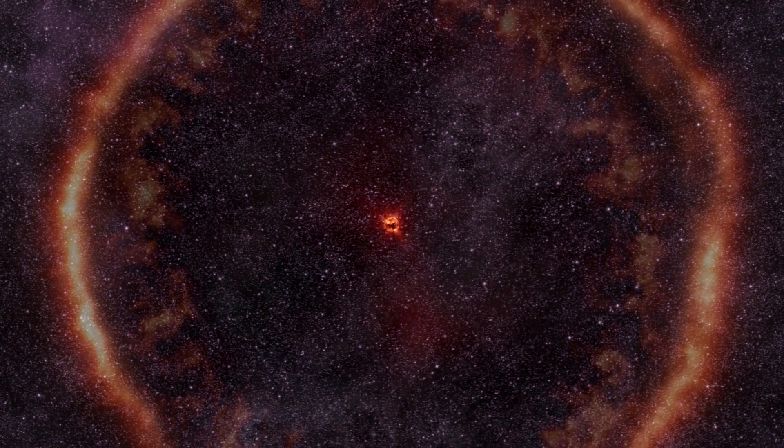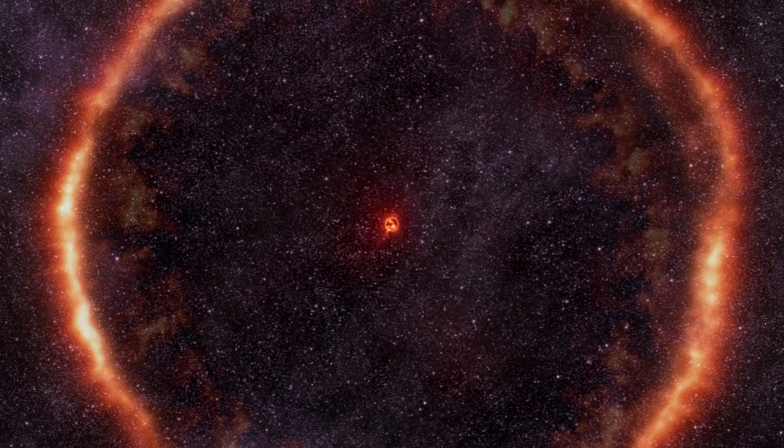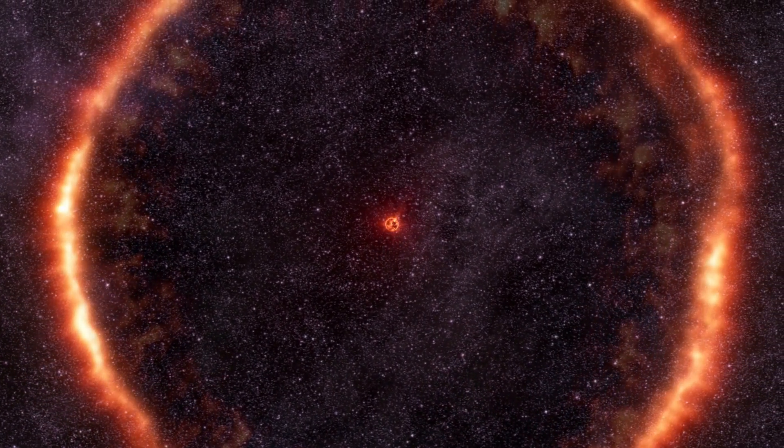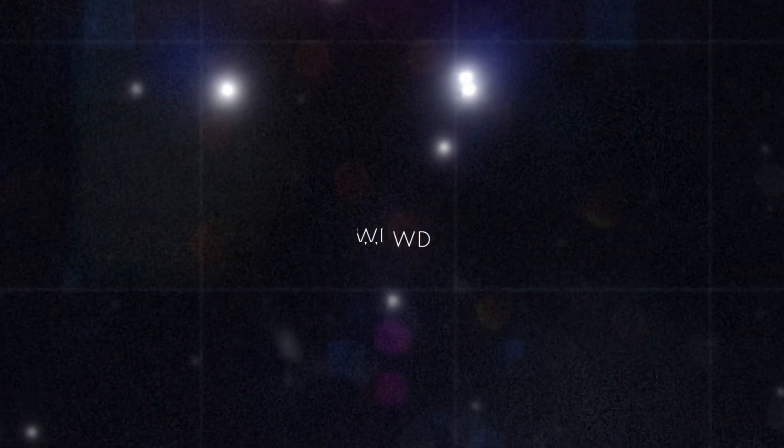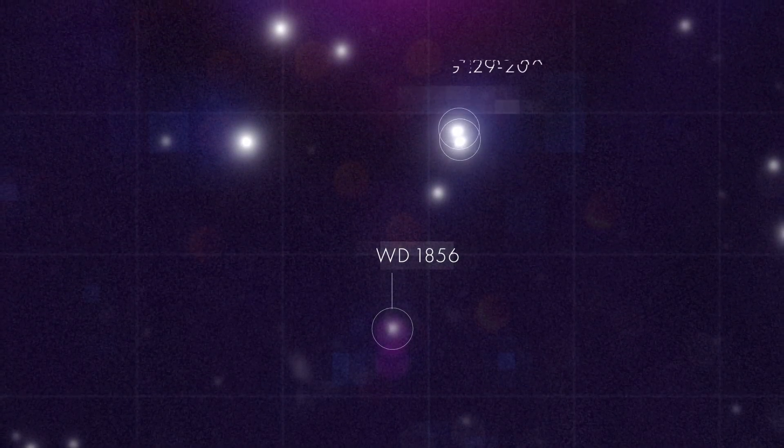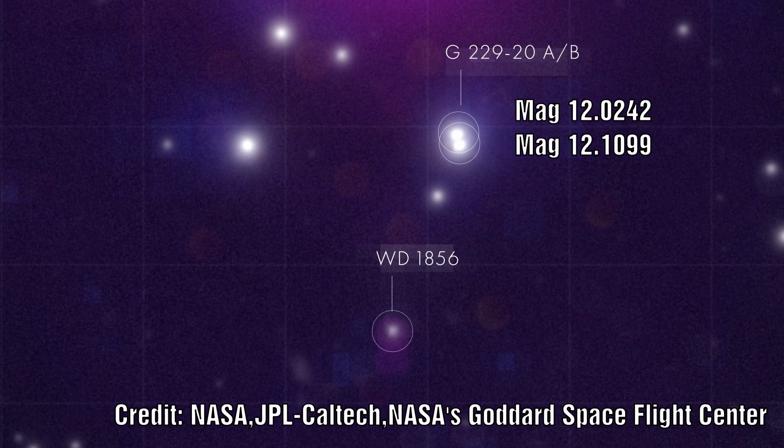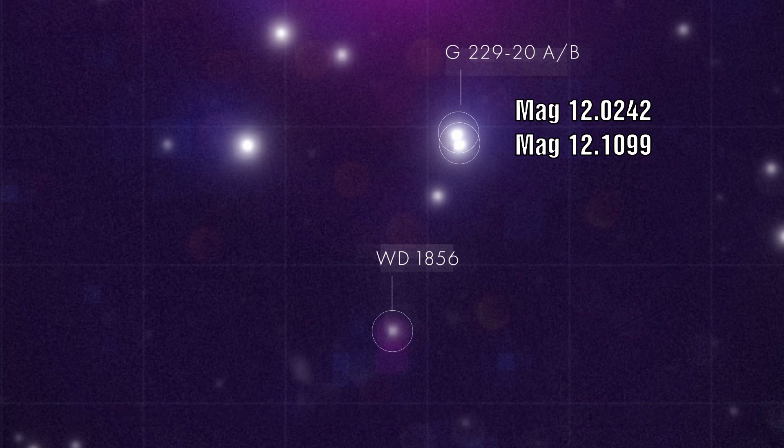And it is not like this star is a long distance away from us, it is a mere 80 light years away. Returning to the system we see that the two red giants have very similar magnitudes of 12.0242 and 12.1099 and this compares to the white dwarf star which has a magnitude of between 17 and 15, and here lower numbers mean brighter stars.